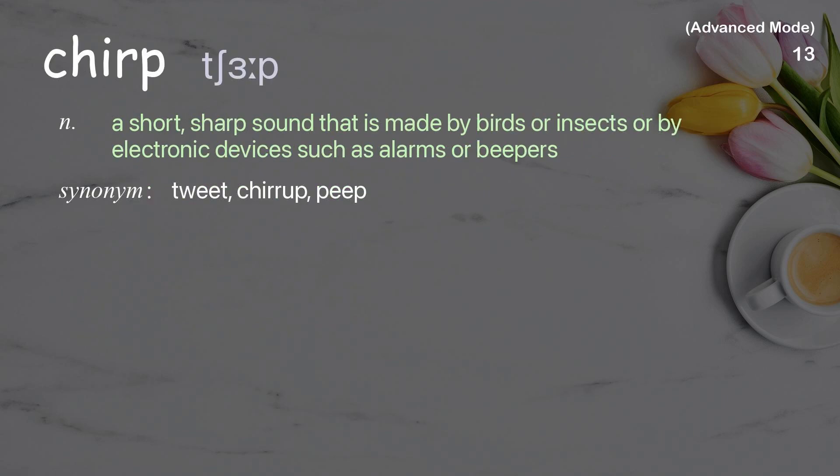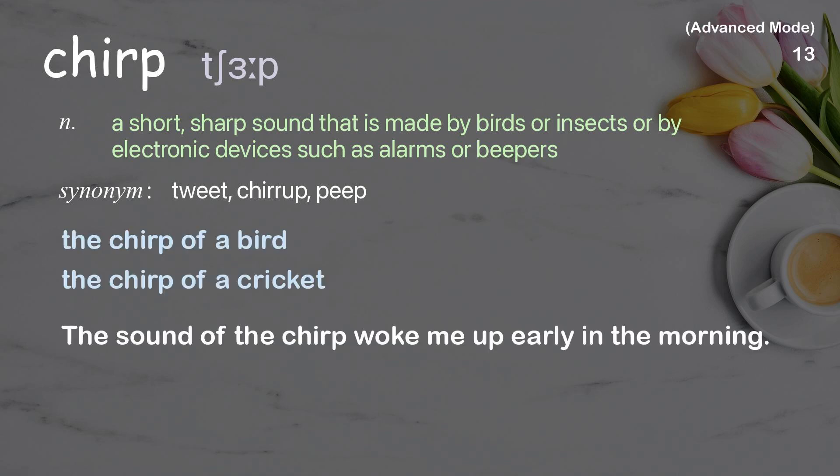Chirp. A short, sharp sound that is made by birds or insects or by electronic devices, such as alarms or beepers. Examples: The chirp of a bird. The chirp of a cricket. The sound of the chirp woke me up early in the morning.